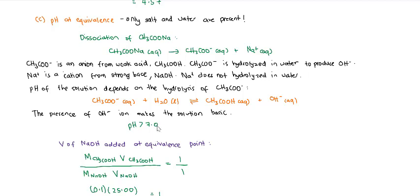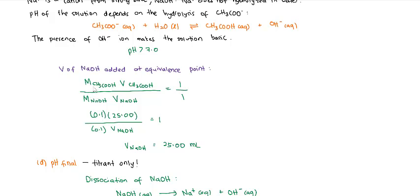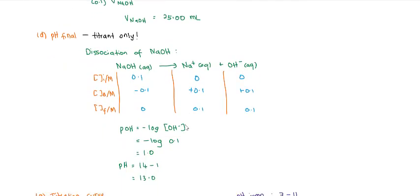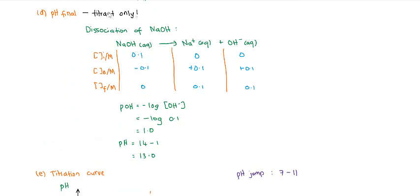Find the volume of sodium hydroxide added at equivalence using the formula M_A V_A / M_B V_B = A/B. Since the ratio of acid to base is 1:1, the volume is 25 mL. Last but not least, the final pH — remember the final pH is for the titrant only. Since our titrant is sodium hydroxide, find the pH of the sodium hydroxide: the dissociation produces OH⁻, so you calculate the pOH and then get the pH value.